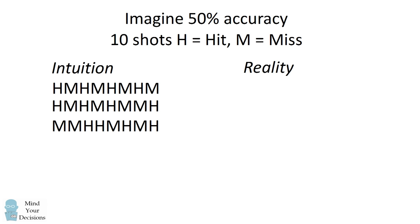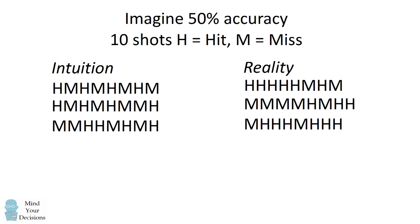In reality, many times the player will have several hits in a row, and several misses in a row. And this has nothing to do with the player having the hot hand, or being on a cold streak. This is simply the result of random probability.